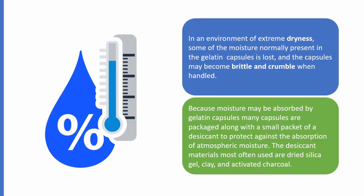In an environment of extreme dryness, the moisture in the gelatin capsule can evaporate. If the capsule is exposed to extreme heat, it can become brittle because the water inside the gelatin evaporates out. Because moisture can be absorbed by gelatin capsules, many capsules are packaged along with a small packet of desiccant — your silica gel — which absorbs excess moisture from the air to protect the capsules.